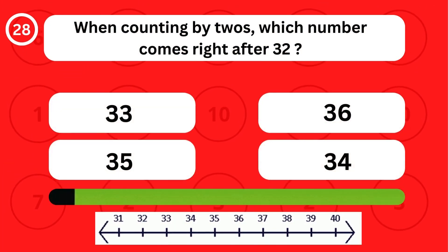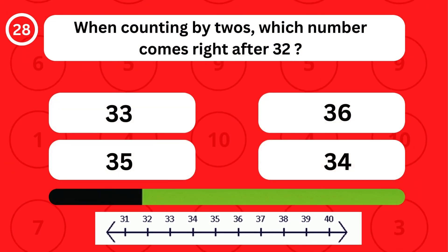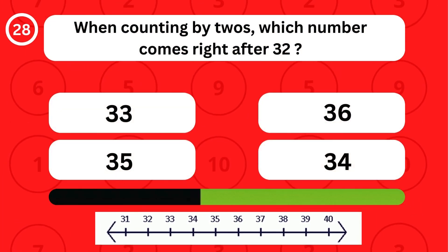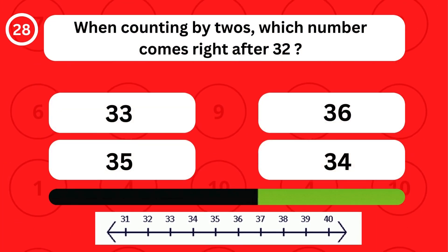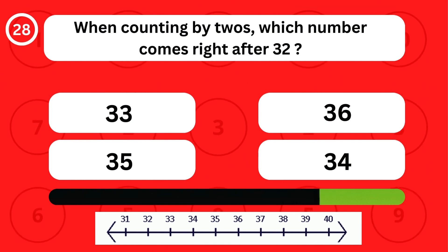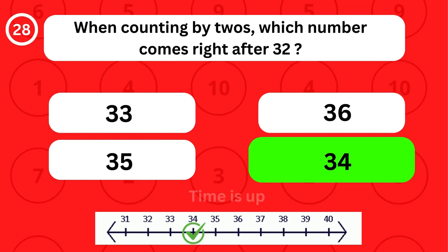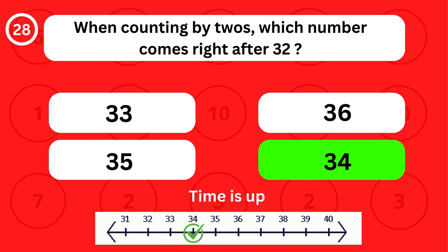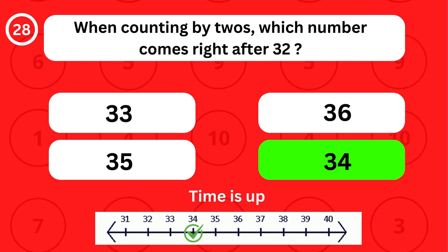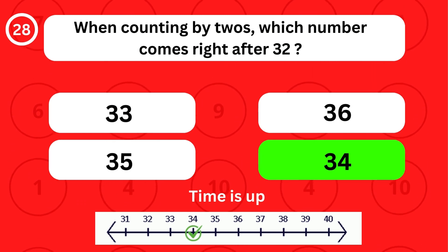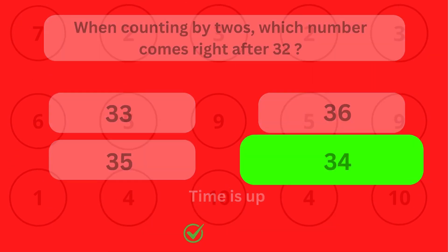When counting by twos, which number comes right after 32? When counting by twos, the number 34 comes right after 32.